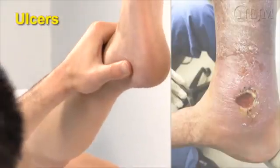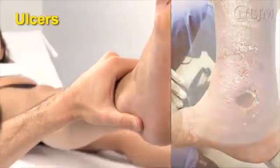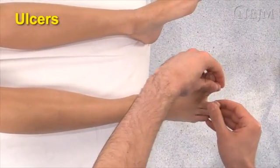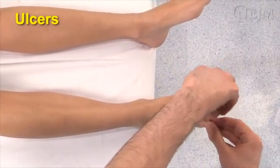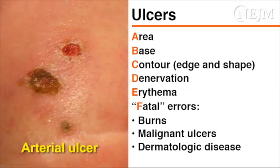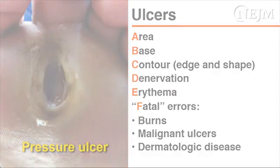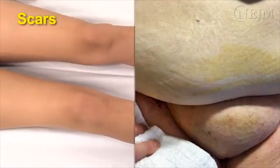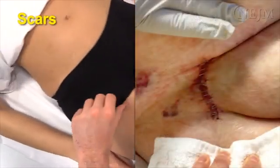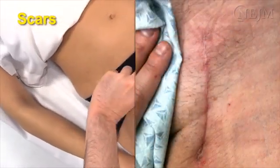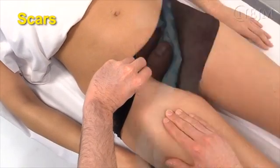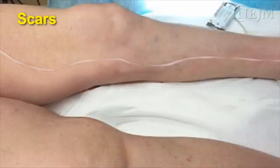Identify any leg ulcers, making sure to inspect the heels and the skin between the toes. Note the location, size, edges, and base of any ulcer that is present. Using an A-to-F descriptive system may be helpful in the assessment of an ulcer. Look for scars on the legs from previous procedures — scars in the groin can be easily overlooked. Carefully examine the medial aspect of the leg for scars caused by lower limb bypass surgery, such as femoral popliteal or femoral distal bypass.